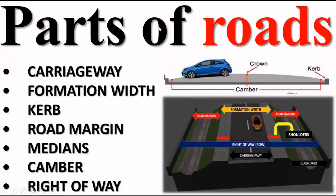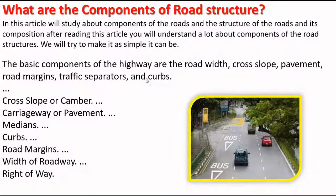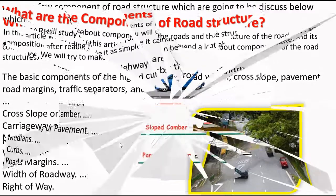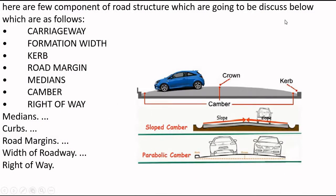Assalamu alaikum, dear students. Today we will study about parts of roads. In this article we'll study about the components of roads, the structure of roads, and their composition. After reading this article you will understand a lot about the components of road structure. The basic components of a highway or road include cross slope, pavement, road margins, traffic separators, carriageway, medians, curbs, road margin, width of roadway, and right of way.